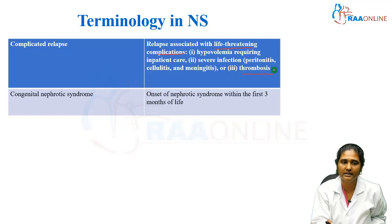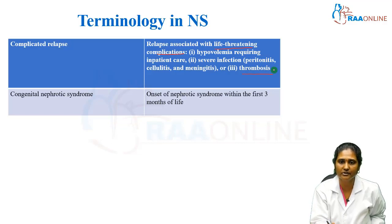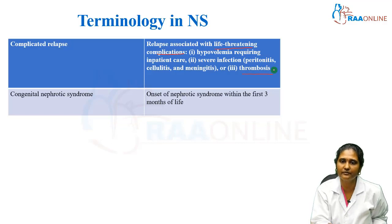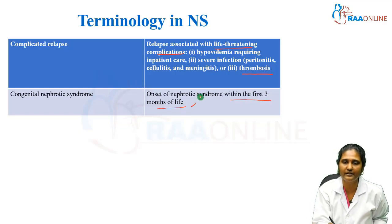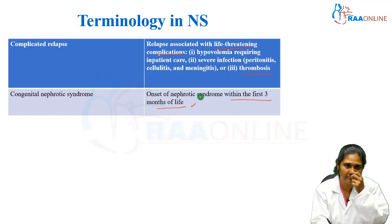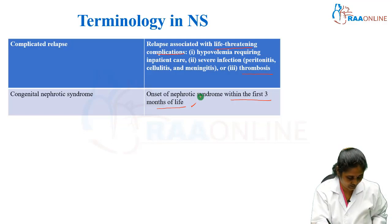When you call it as congenital nephrotic syndrome — when the onset of nephrotic syndrome is within the first 3 months of life, then it is considered to be congenital nephrotic syndrome.